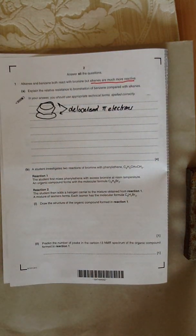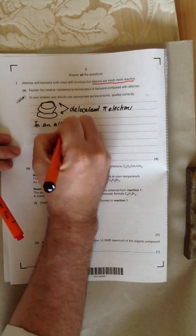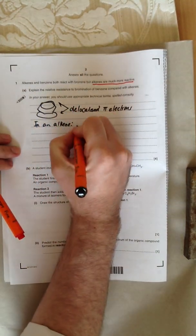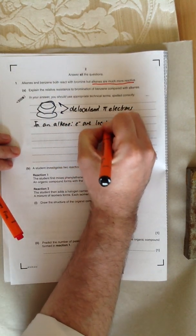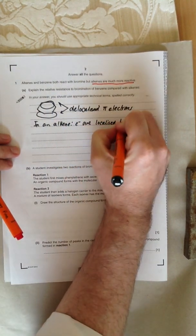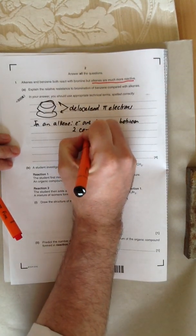The difference between that and an alkene: in an alkene, what can we say about the electrons? We can say the electrons are localized between two carbons. They're less spread out. The electrons in an alkene are localized between two carbon atoms.